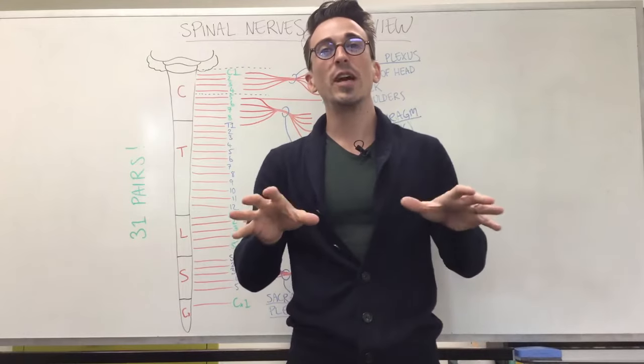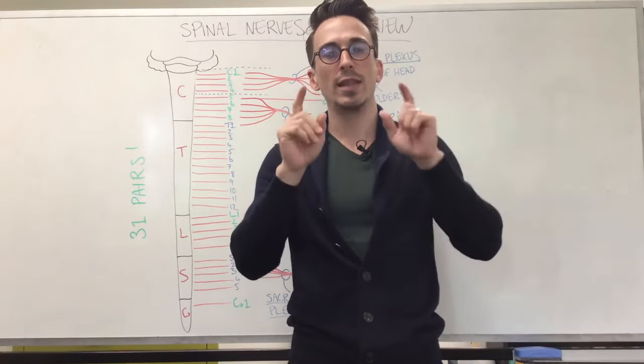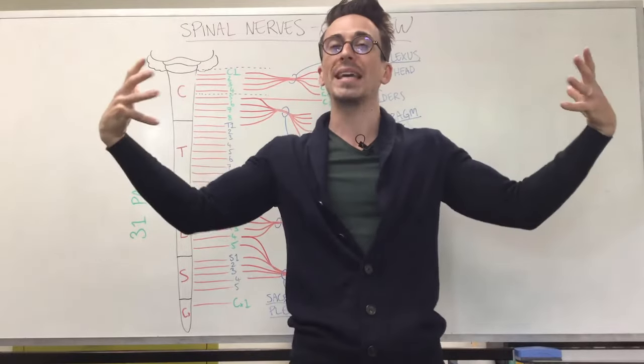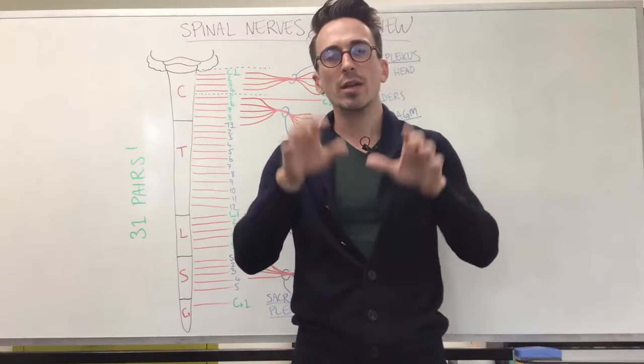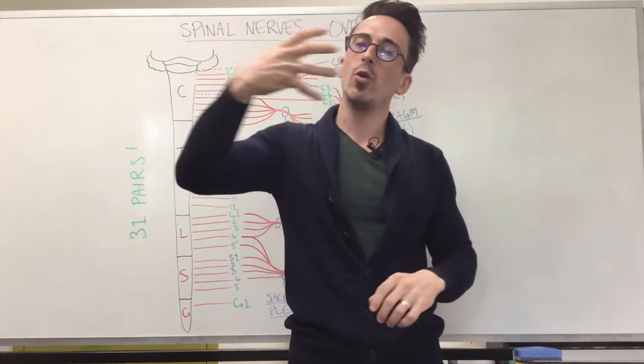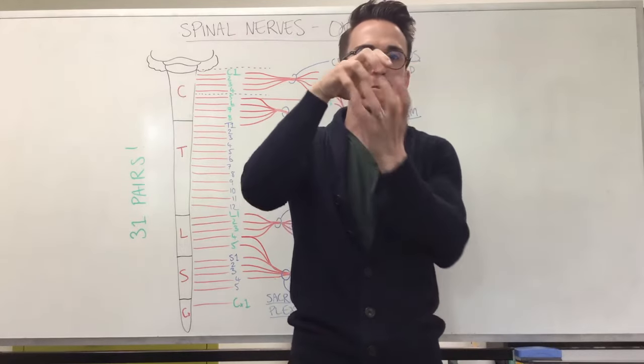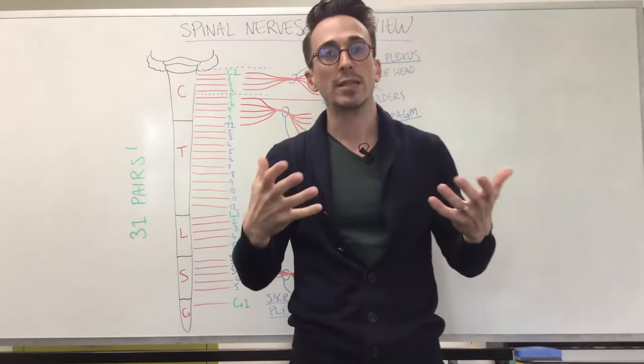Hi everybody, Dr. Mike here. In this video we're going to take a quick look at the 31 pairs of spinal nerves. These are the nerves that shoot out and away and come back in to the spinal cord. We're also going to take a quick look at the nerve plexuses. This is where some of the nerves that shoot out and away come together to form a bundle and then branch back out again. And this bundle or network is what we term a plexus.